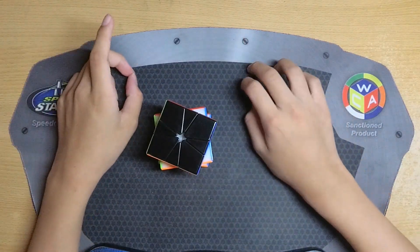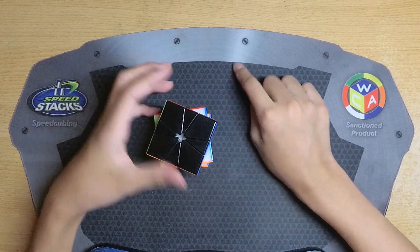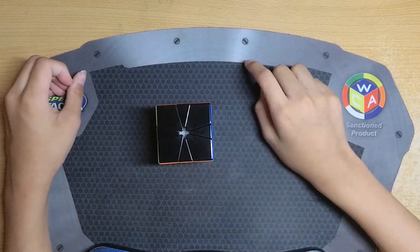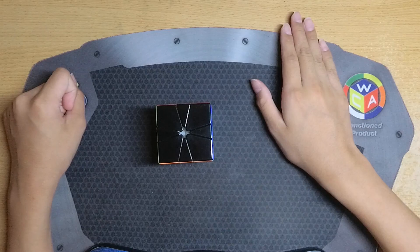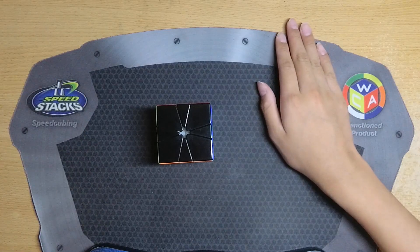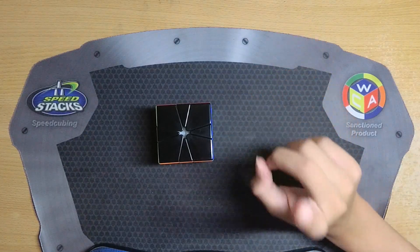That was a 5.40 with 20 slices meaning it was 3.7 slices per second, so once again really nice turning. This solve was near perfect. There was really not a flaw in it I guess. There might have been a lock up here and there, but other than that it was a really good solve.